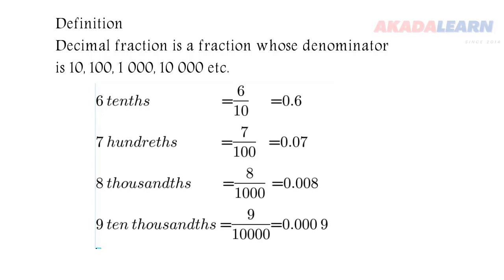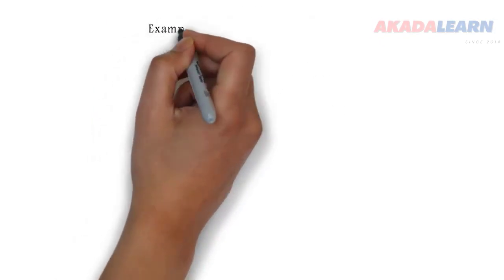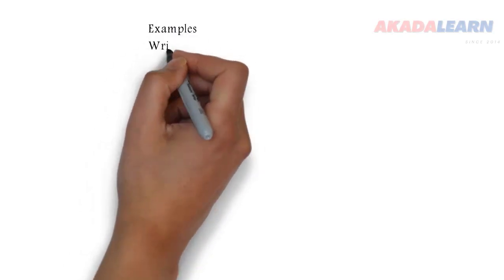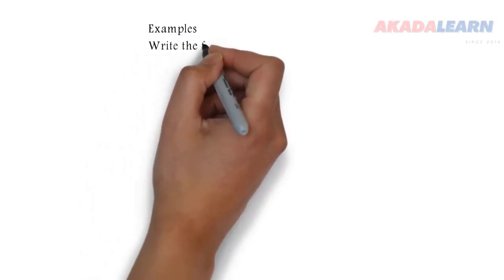You can also see eight thousandths and nine ten thousandths there. So let's go right away to solving some examples on small numbers.